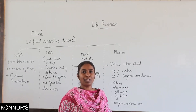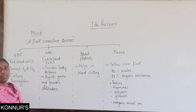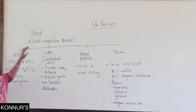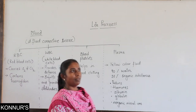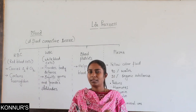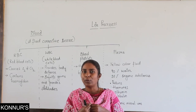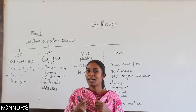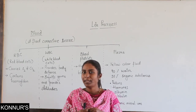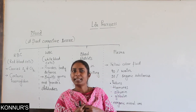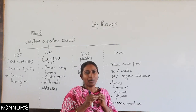Now let us study about blood, which is a fluid connective tissue. The moment we say blood, the thing that comes to your mind is a liquidy red color fluid which comes out when any injury takes place on a body. Do you think blood is made up of only one component?